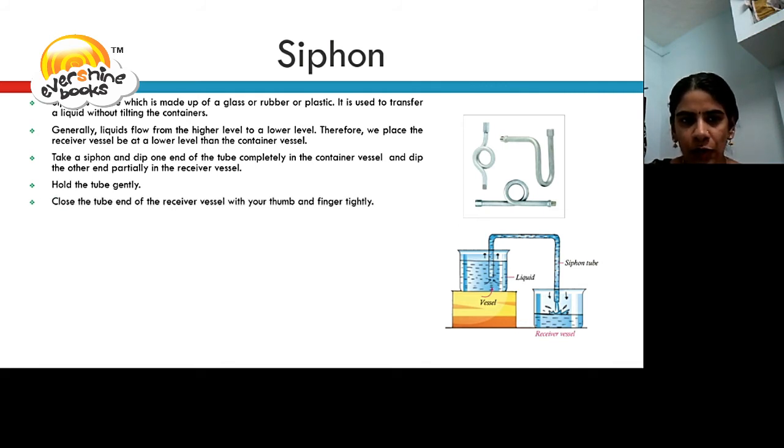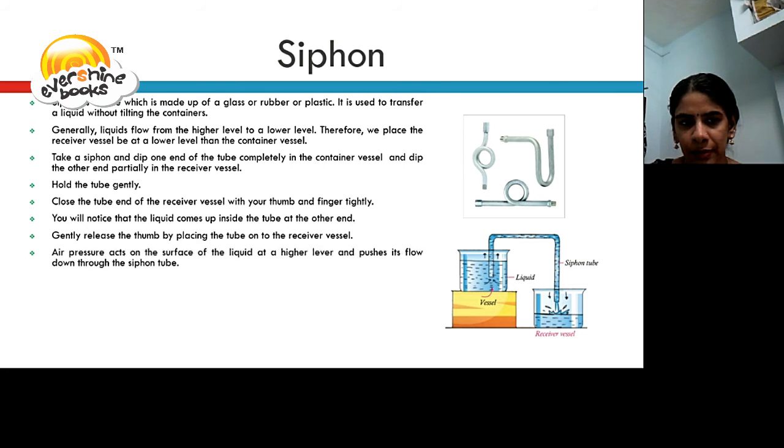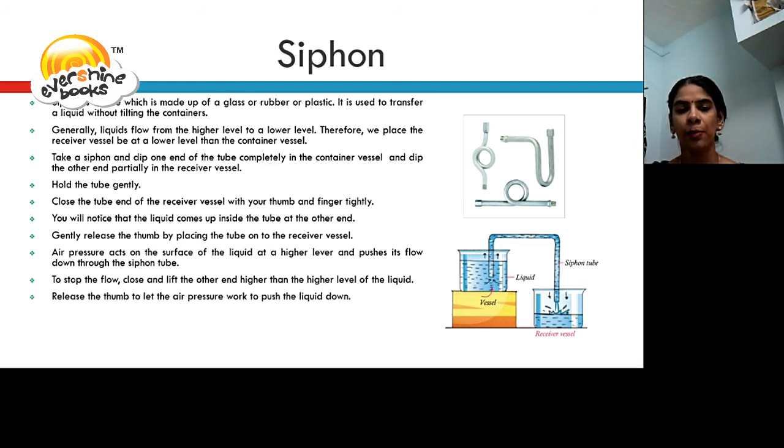Close the end of the tube of the receiver vessel with your thumb and finger tightly. You will notice that the liquid comes up inside the tube at the other end from the container vessel. Gently release the thumb by placing the tube onto the receiver vessel. Air pressure acts on the surface of the liquid at a higher level and pushes it down through the siphon tube. To stop the flow, close and lift the other higher than the higher level of the liquid. Release the thumb to let the air pressure work to push the liquid down. Thus, the tube is emptied.